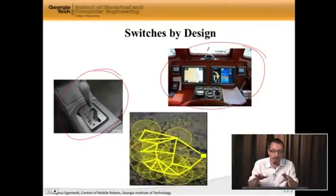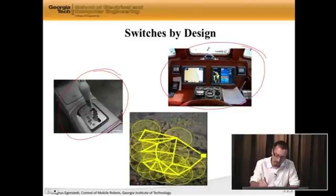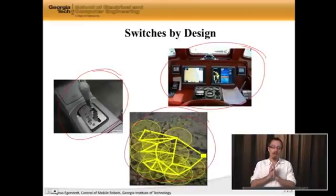So instead of designing one controller that takes me from Atlanta, Georgia to Stockholm, Sweden, you have a bunch of different controllers that you're switching through in order to do this. And at the bottom here, we have a sensor network where, in order to preserve power, you're turning sensors on and off on purpose. So you're switching by design rather than by necessity.